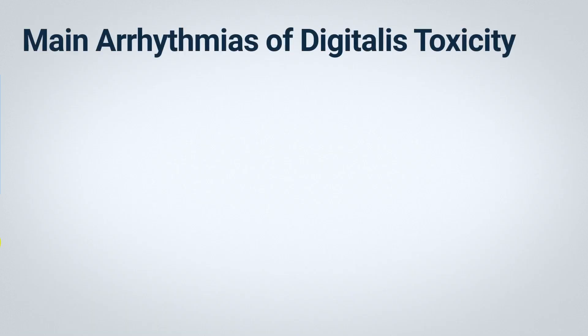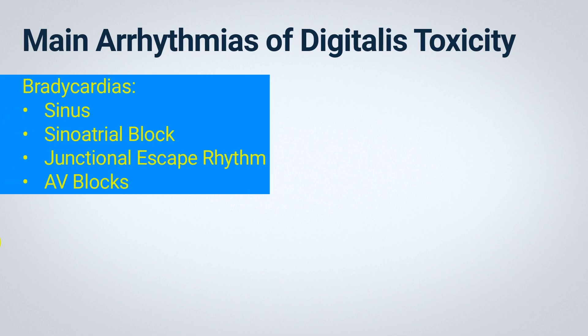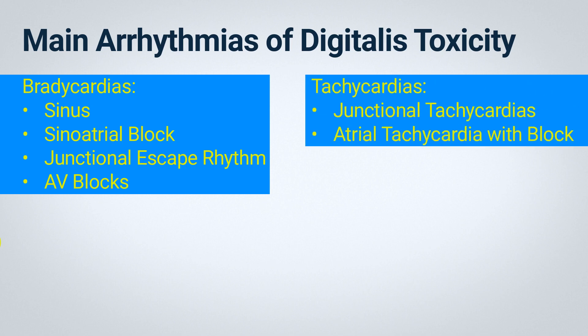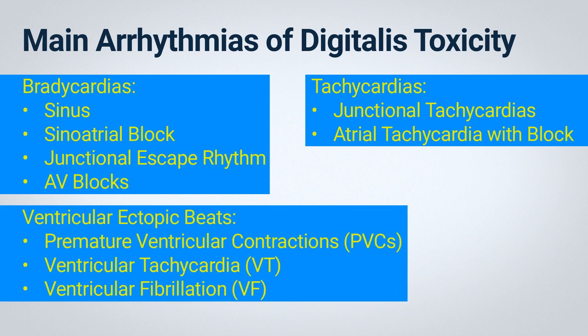Recall that when a patient suffers from digitalis toxicity, they may experience a range of arrhythmias, from tachyarrhythmias to bradyarrhythmias. Examples of bradyarrhythmias include sinus bradycardia, sinoatrial block, or such extreme bradycardia that it evolves into a junctional escape rhythm or atrioventricular blocks ranging from first-degree AV block to complete heart block. In terms of tachyarrhythmias, the patient could develop junctional tachycardia, atrial tachycardia with variable block, or an increase in ventricular ectopic beats ranging from isolated beats to ventricular tachycardia or even ventricular fibrillation, potentially leading to death.